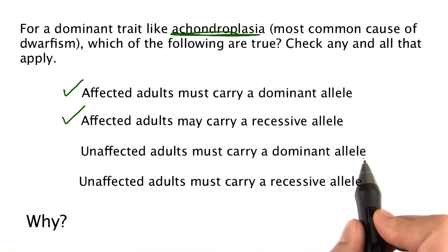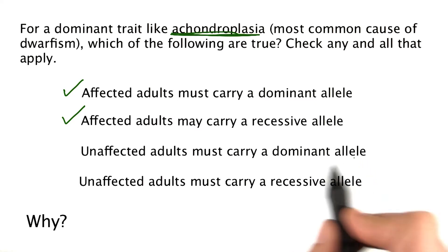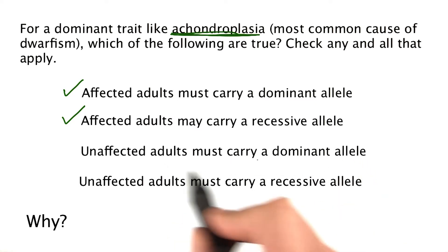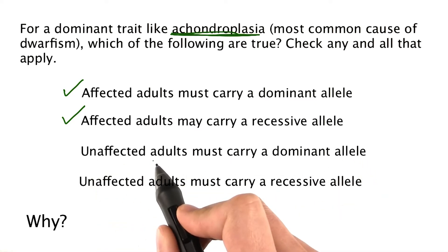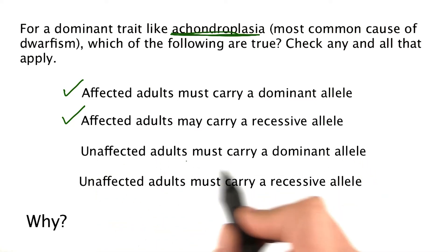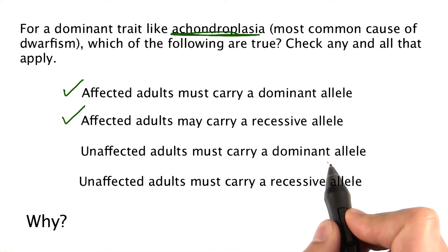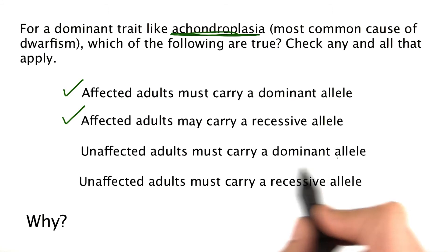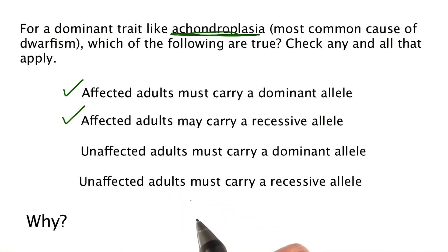Unaffected adults must carry a dominant allele. That's not true at all, right? Because if you're unaffected, then you don't have one of these alleles — so you don't have a dominant allele if you're unaffected.